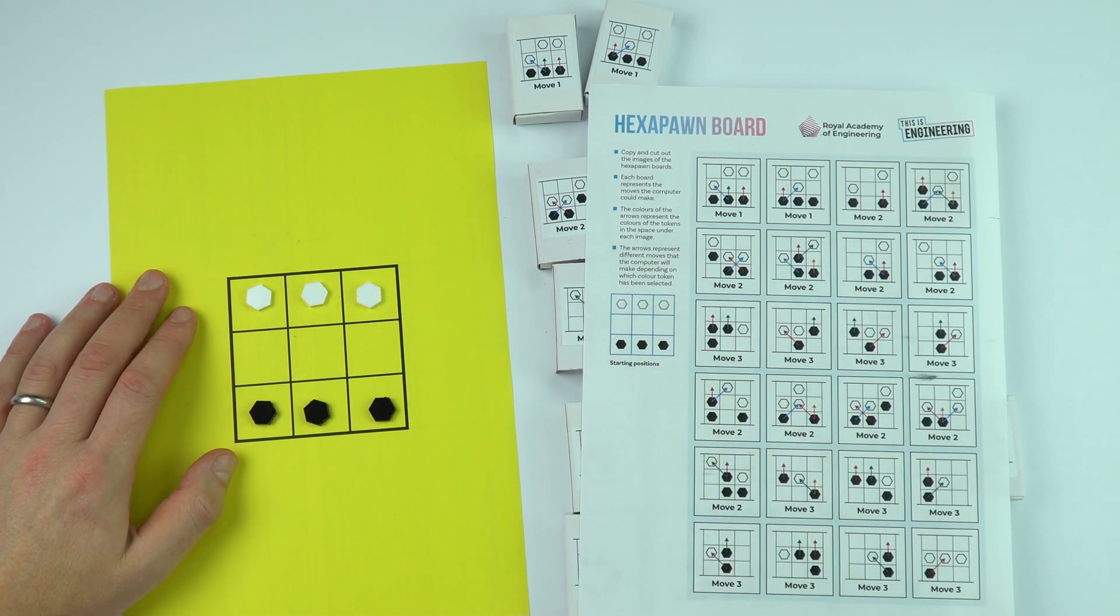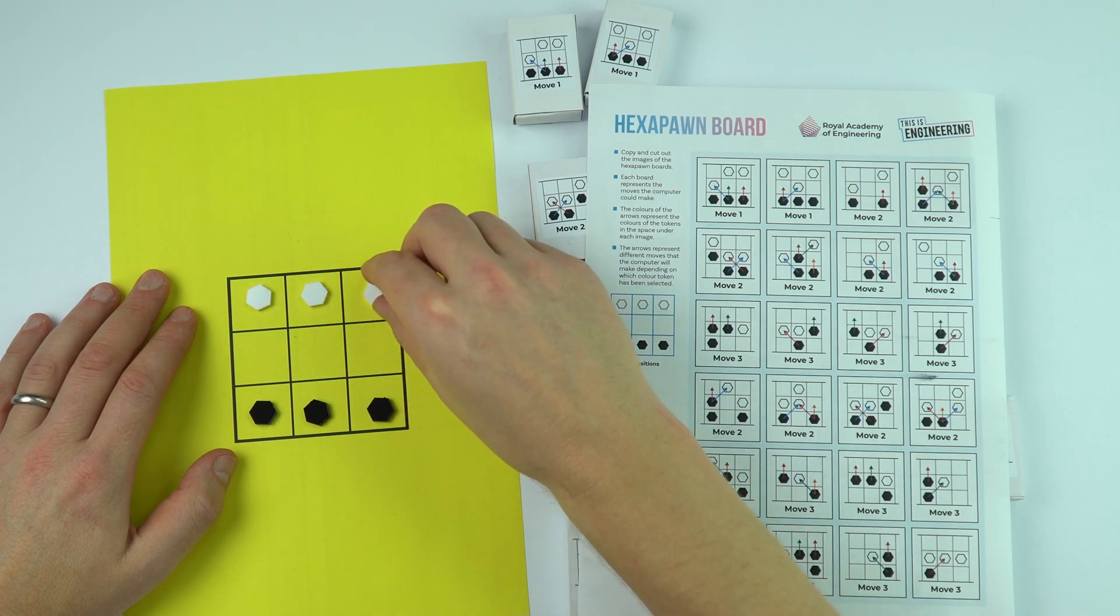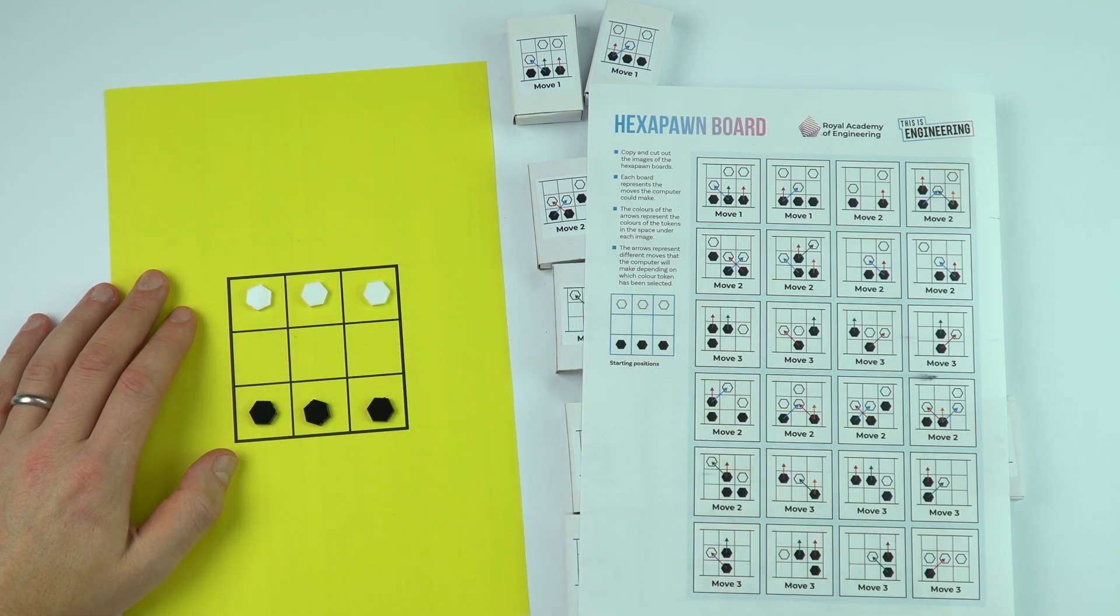There are two main ways to win: you can either get one of your pieces over to the other side, or you can block your opponent from making any future moves.